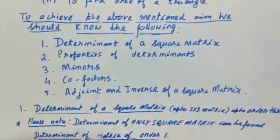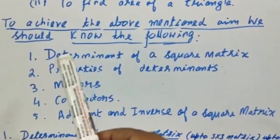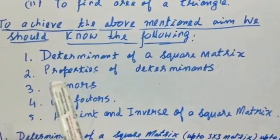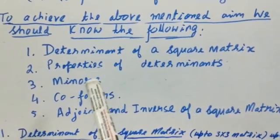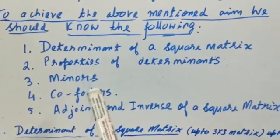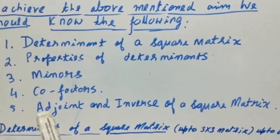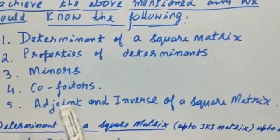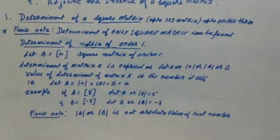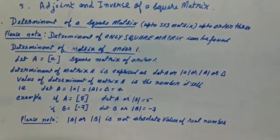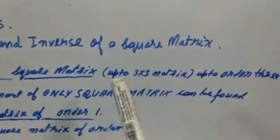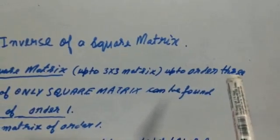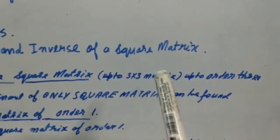To achieve these aims there are certain basic things we should know: how to find the determinant of a square matrix, the properties of determinants, what minors and cofactors are, and finally how to find the adjoint and inverse of a square matrix. In your syllabus you have square matrices only up to order three — order one, order two, and order three.